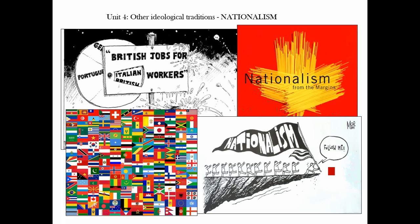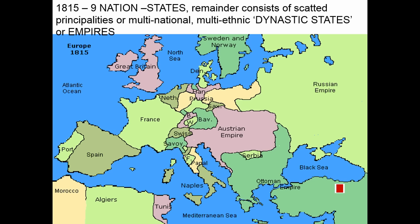In this video we're going to look at the core themes of nationalism. Nationalism is said to have really emerged in Europe with the onset of the French Revolution in the late 18th century, and it's something we'll come back and look at in more detail when we're looking at the strands of nationalism.